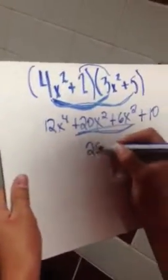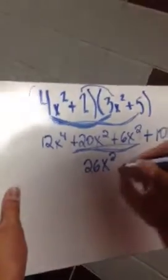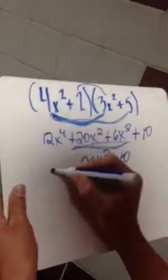So, it would become 26x squared plus 10, and then 12x to the 4th plus 26x squared plus 10, and then that's your answer. And that is your answer for that one.